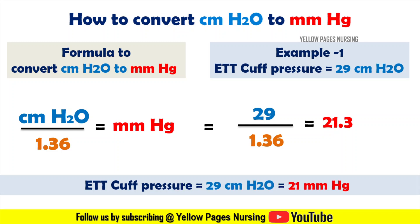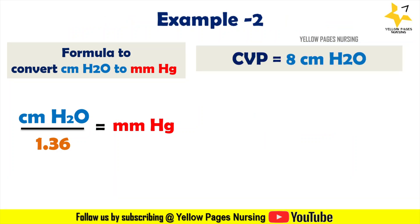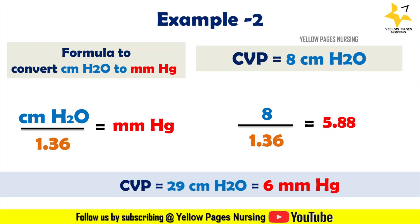Second example: central venous pressure equals 8 centimeter H2O. Here, 8 divided by 1.36 gives the answer 5.88, so the central venous pressure of 8 centimeter H2O is equal to 6 mmHg.